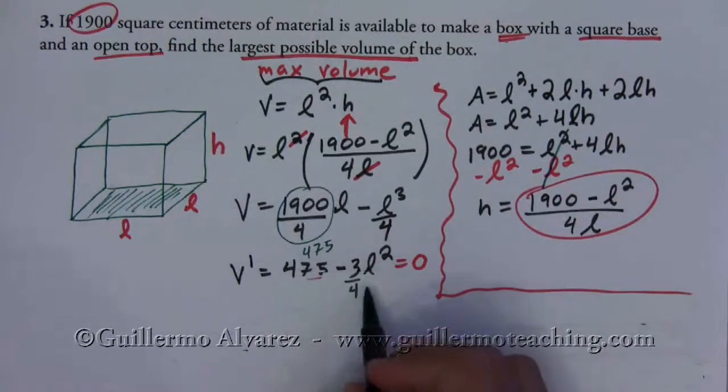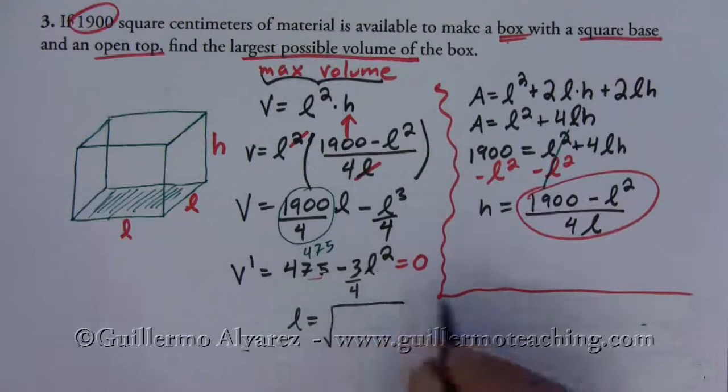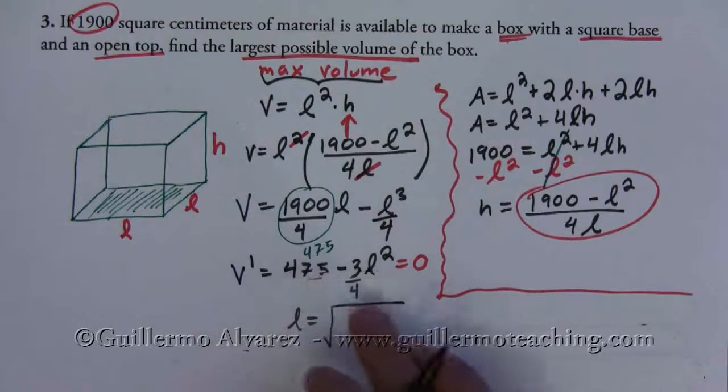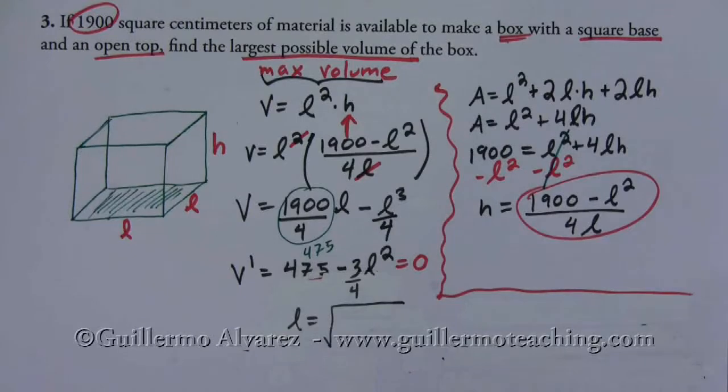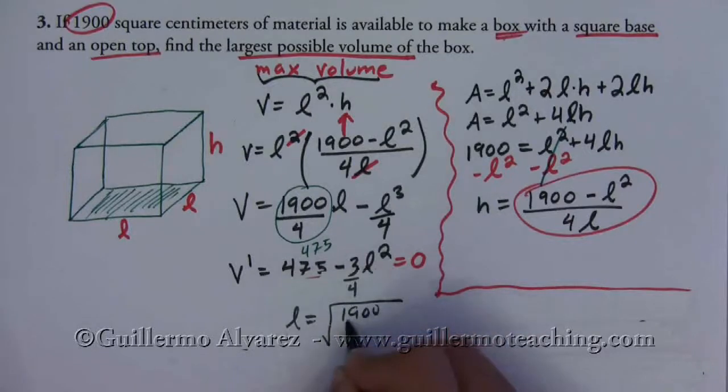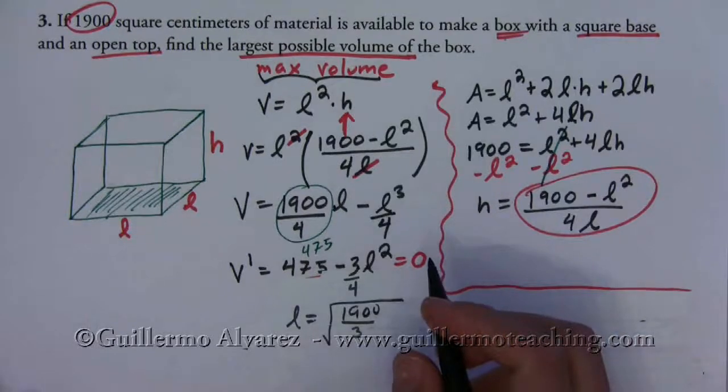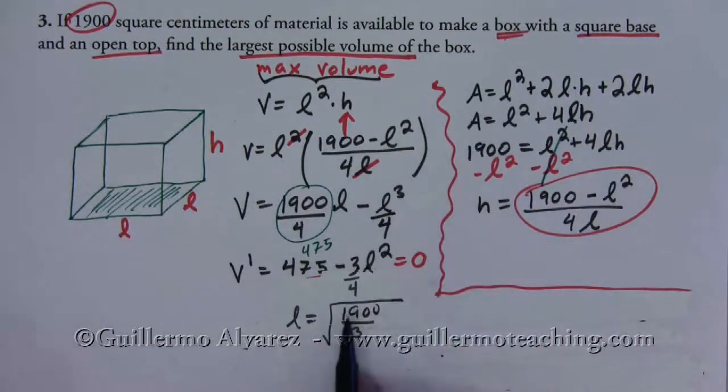So then if I solve for l here, what I'm going to get is that l is equal to the square root of 475 times 4 over 3. So this is square root of 1900 over 3. And this is my only critical point.